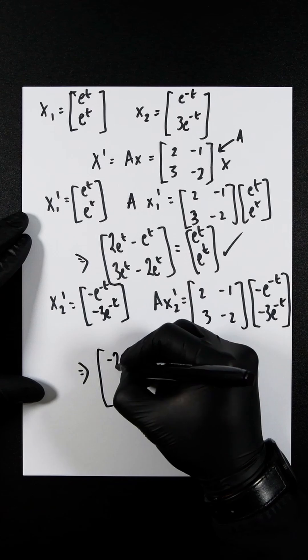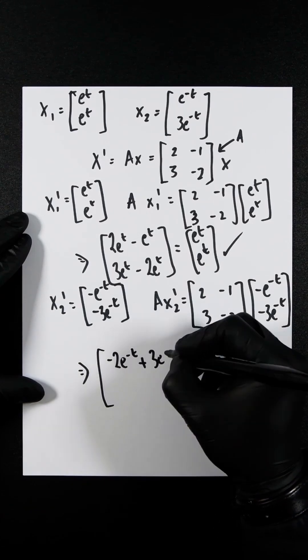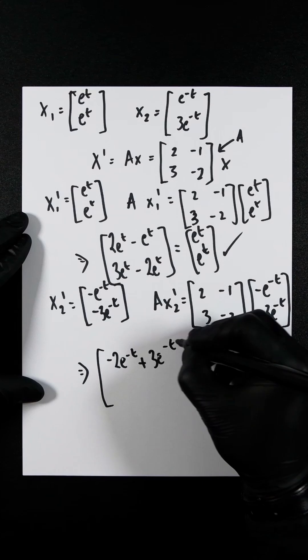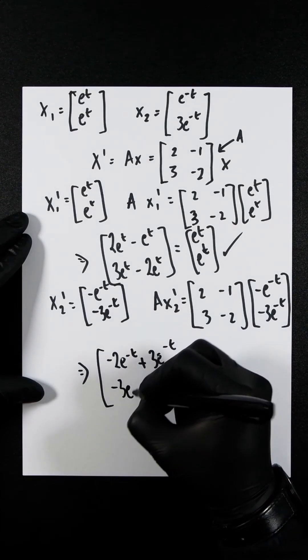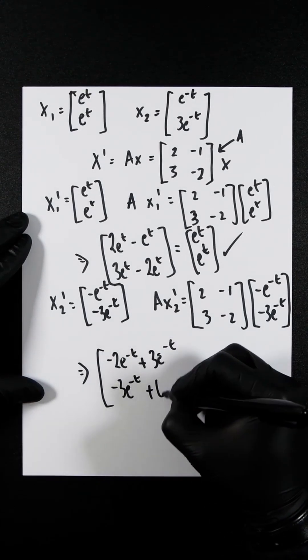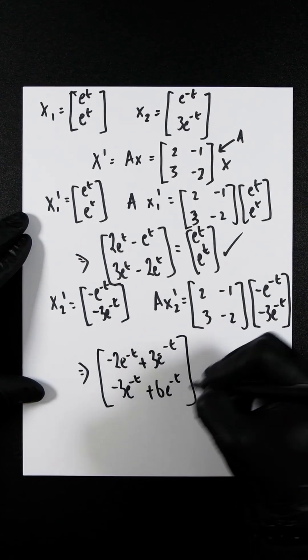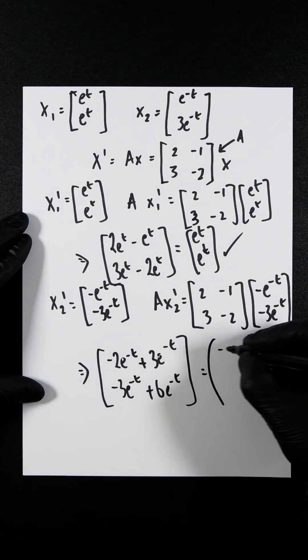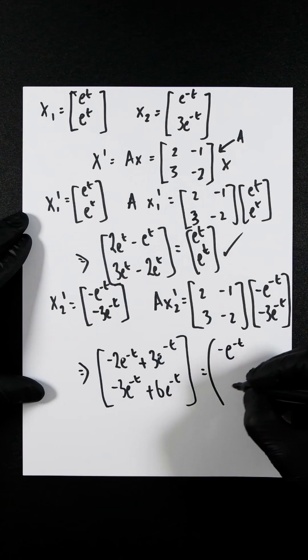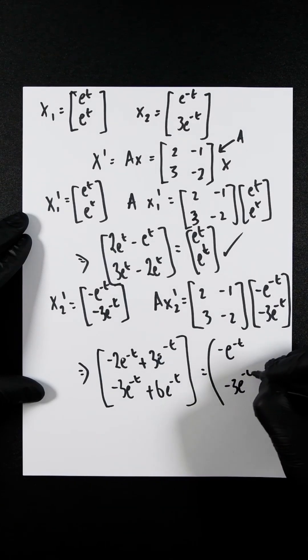You're going to get minus 2e to the minus t, plus 3e to the minus t, minus 3e to the minus t, plus 6e to the minus t, which is going to be minus e to the minus t, and that's going to be minus 3e to the minus t.